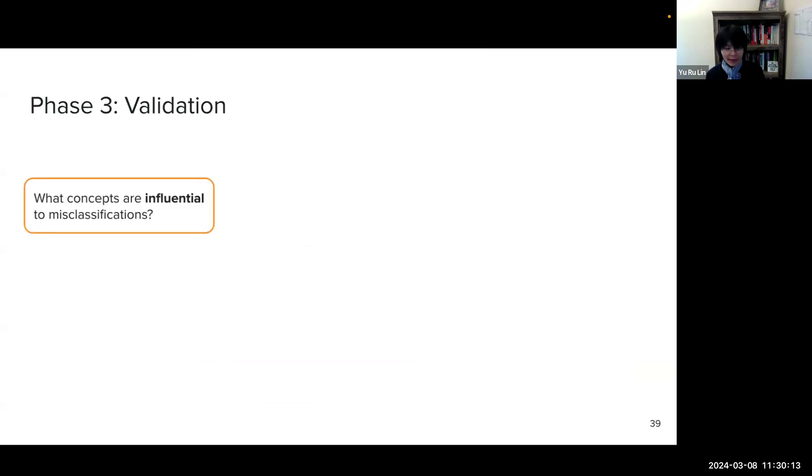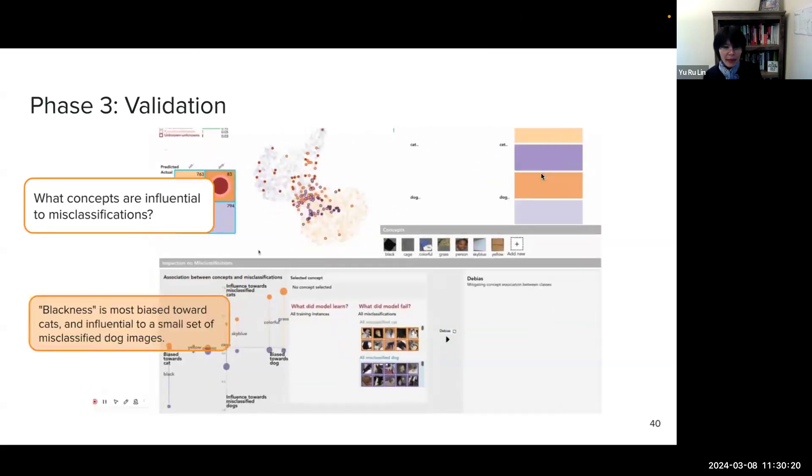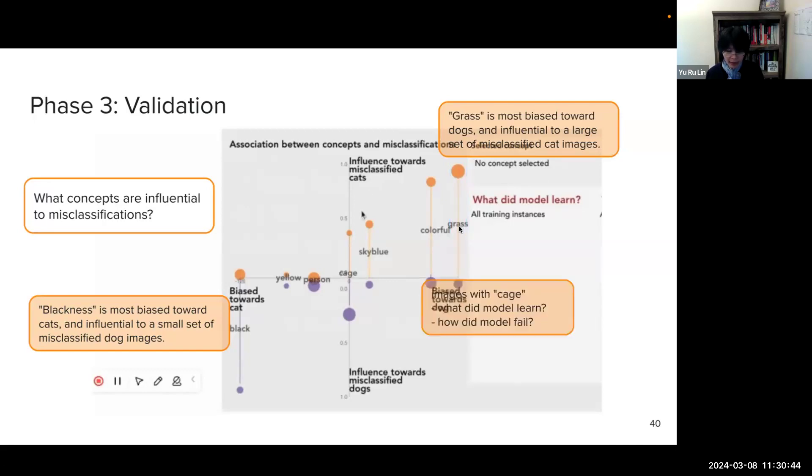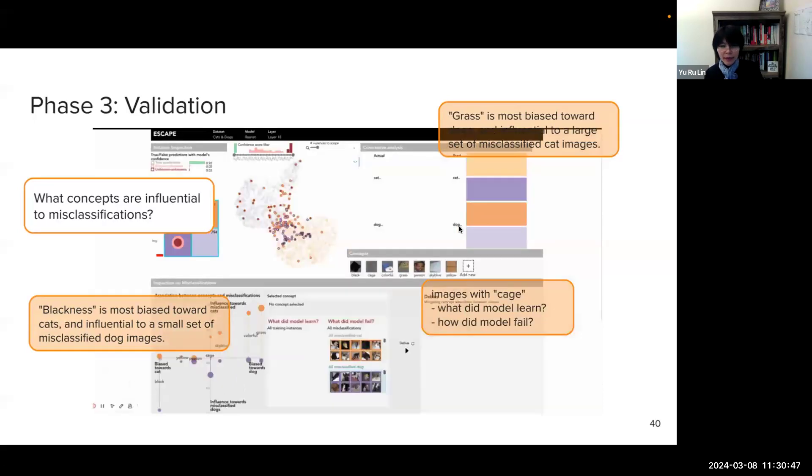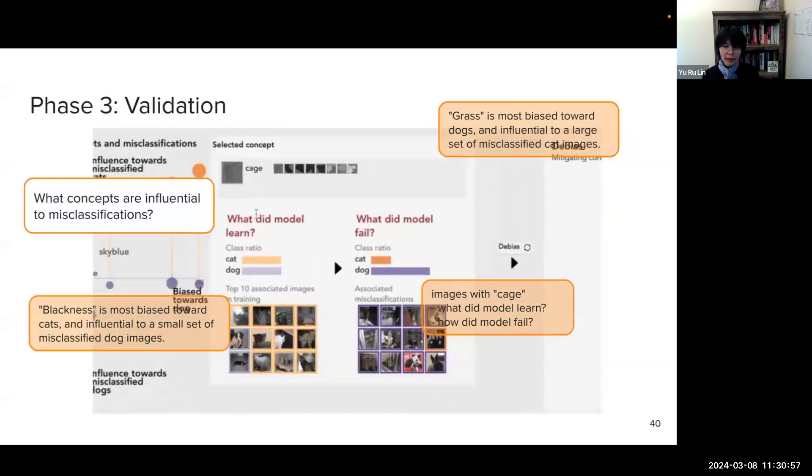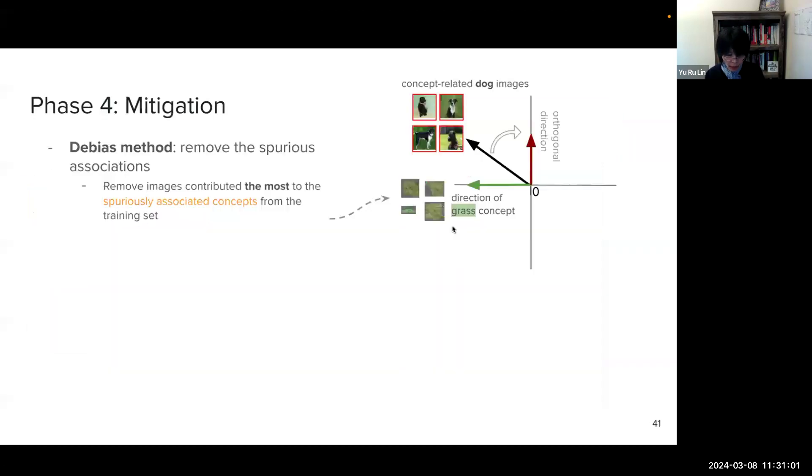So what concepts are influential to misclassification? So using this concept association plot, users can find this blackness is most biased toward cats and influential to small set of misclassified dog images. And the user can click any of the concept and then they can see what did the model learn and how did the model fail through showing these most representative images.